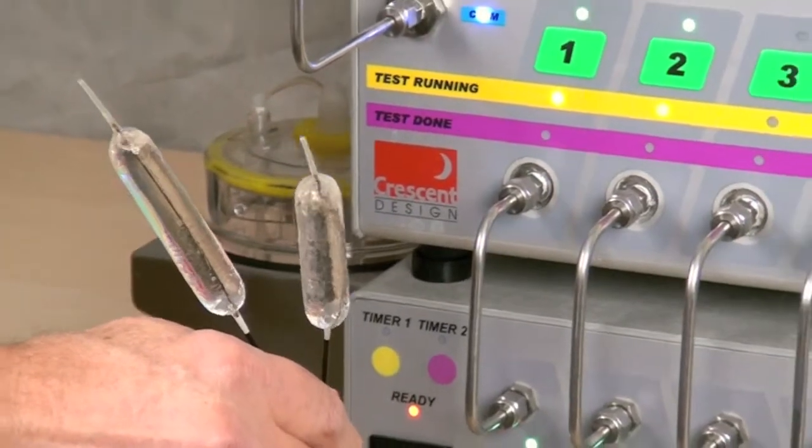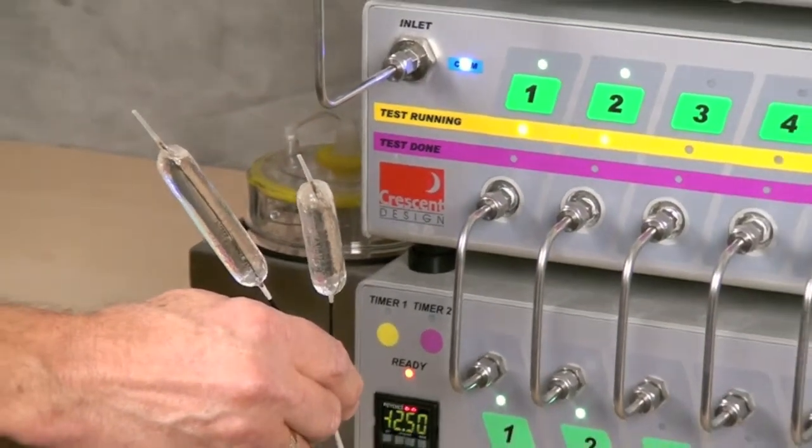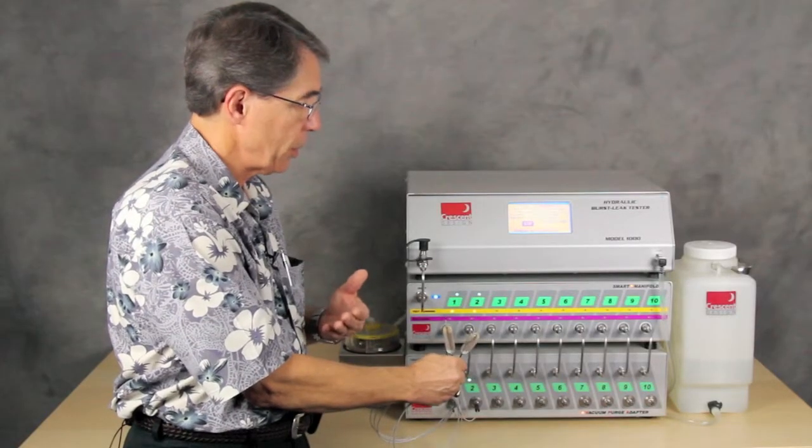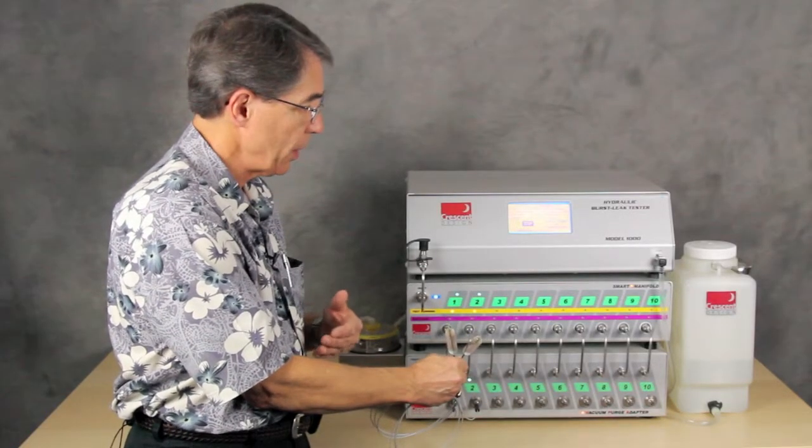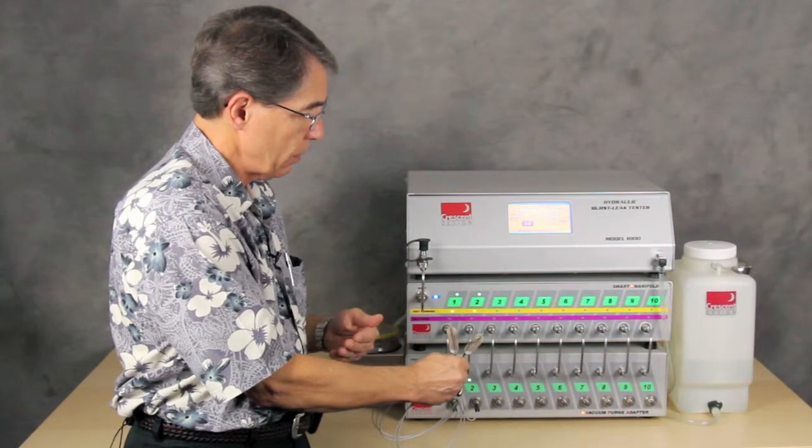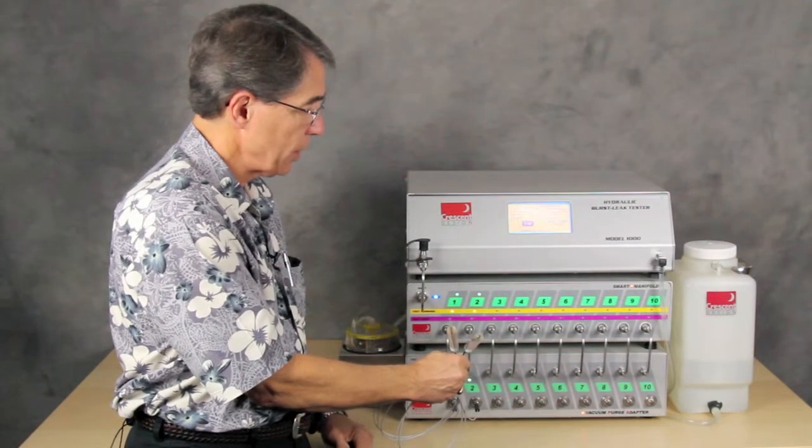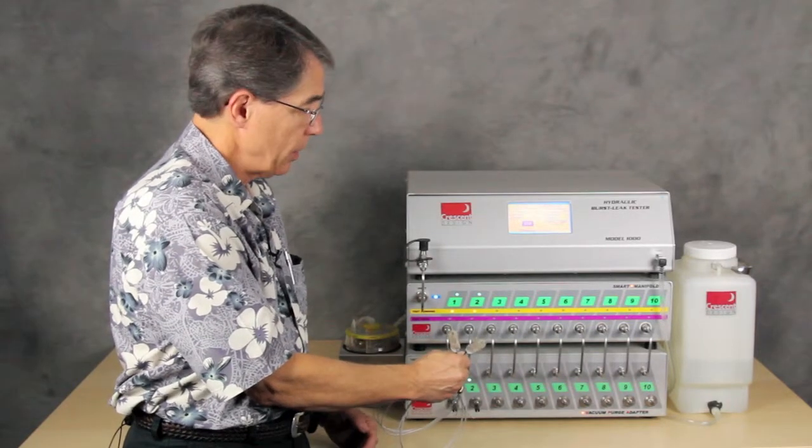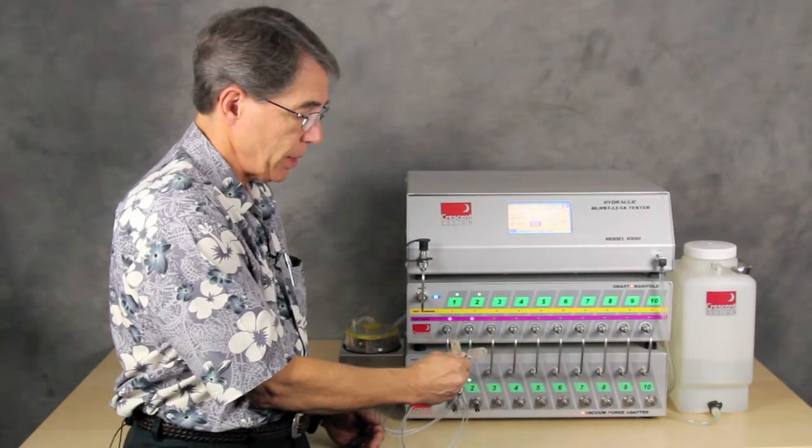So now the HBLT is resetting itself prior to the test. And now it's ramping to pressure. That's a very short test. It only goes to 15 PSI for a maximum of 4 seconds. And then it ramps back down to zero. It's down to zero. And the test is done.